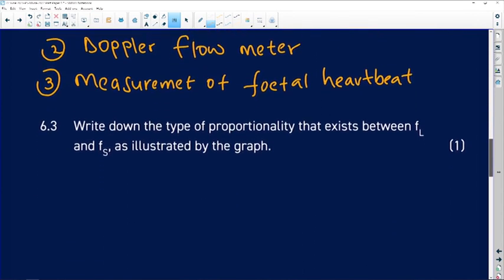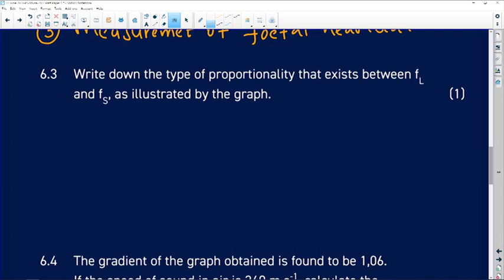Let's move to 6.3. It says write down the type of proportionality that exists between FL, which is frequency of the listener, and FS, which is frequency of the source, as illustrated by the graph.